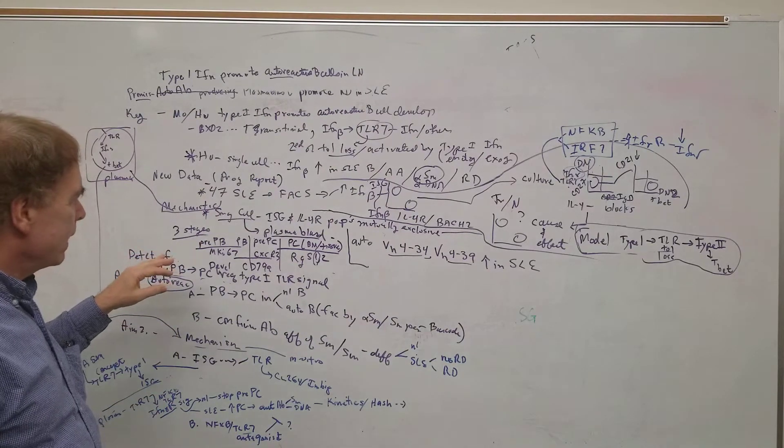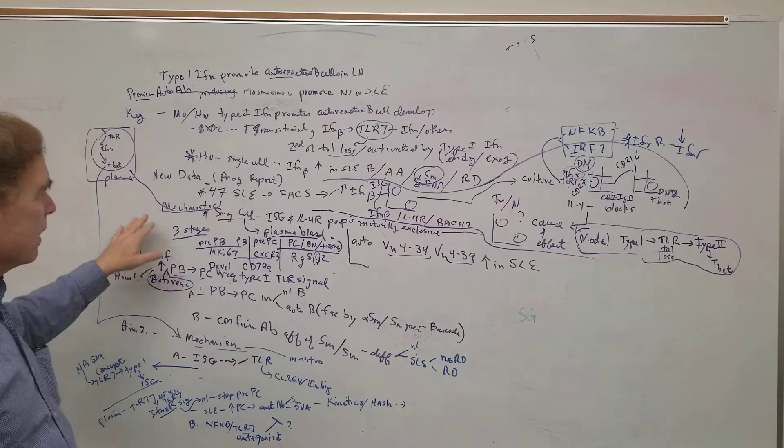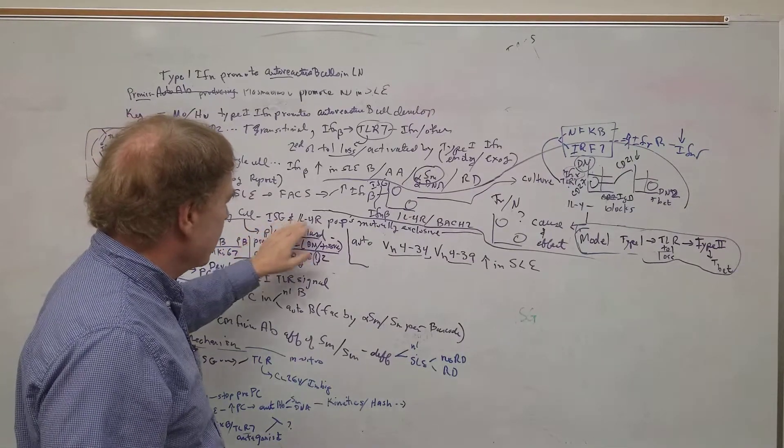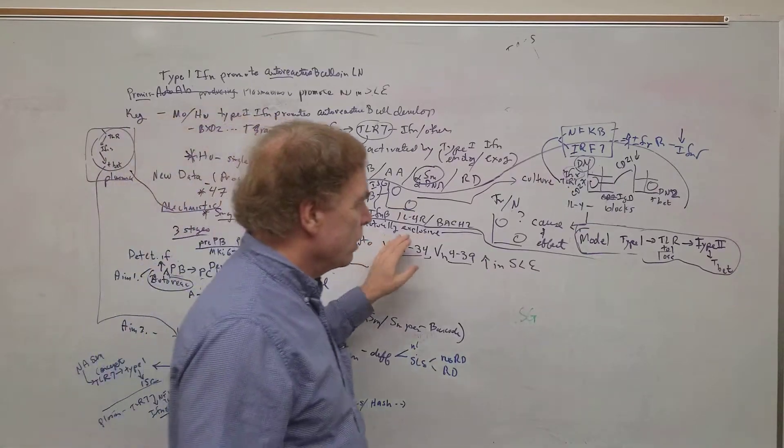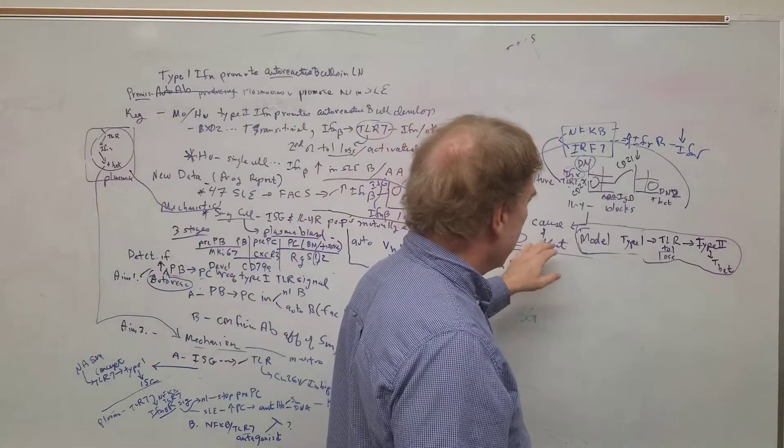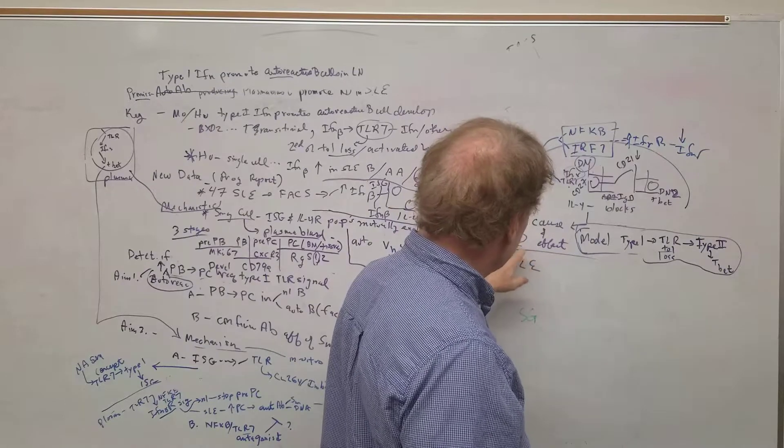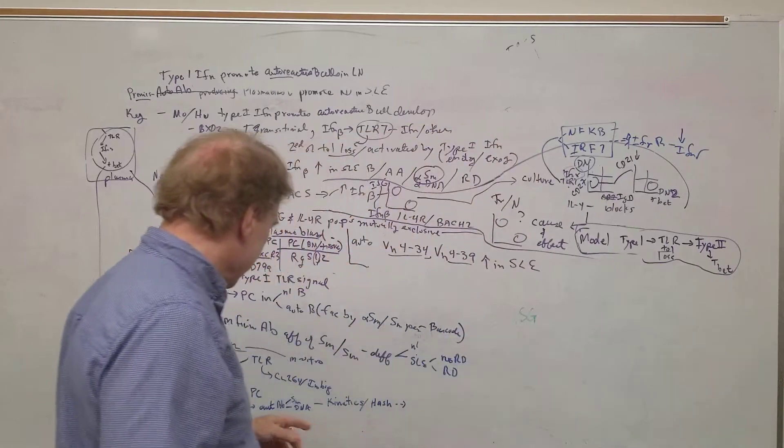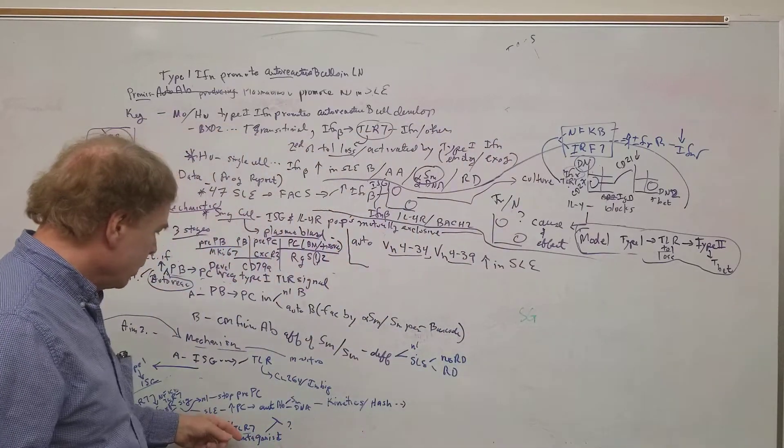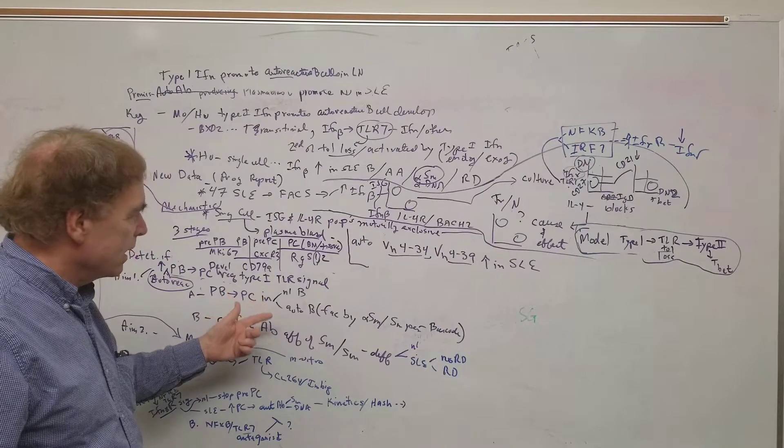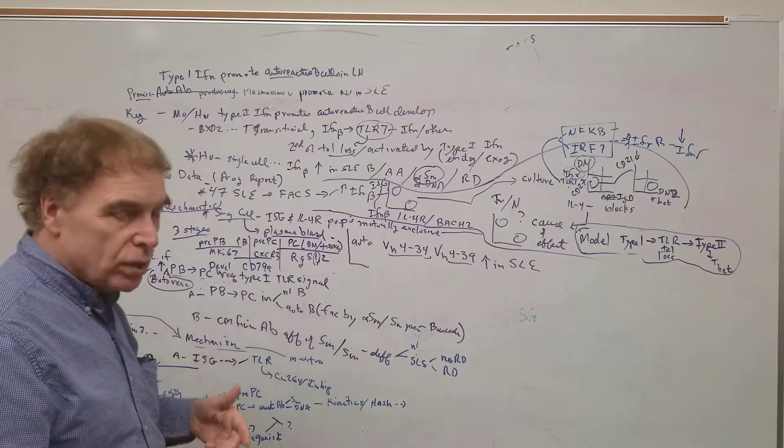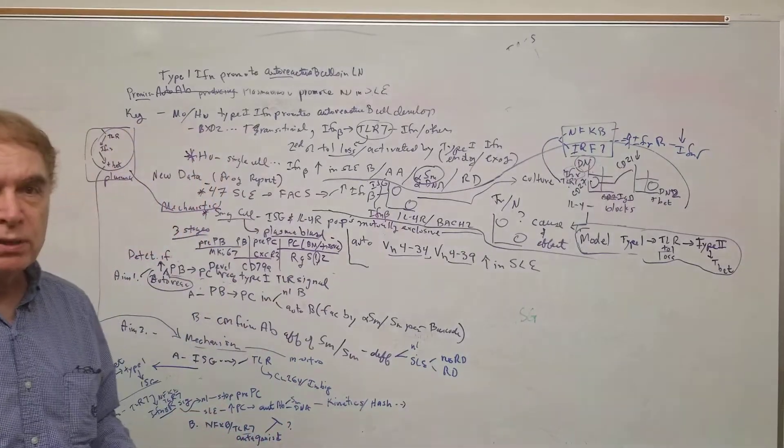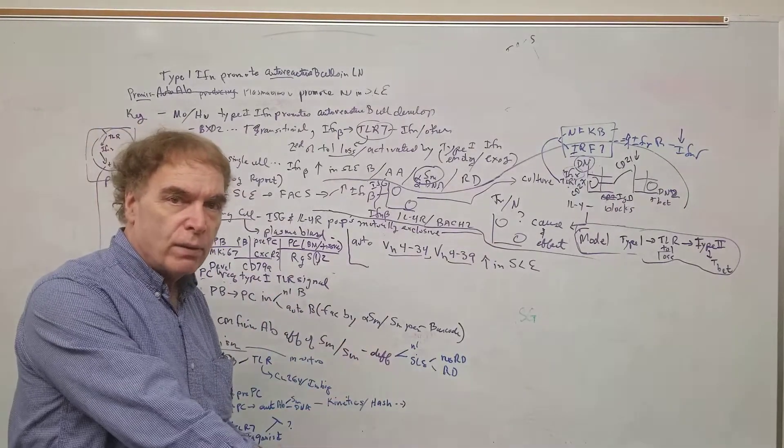They show that there is mutually exclusive populations of either ISG-positive B cells, that is some that have interferon, the genes are high, or IL-4 receptor is high. That's not in 47 people, but you get this dichotomy, you cannot have both ISG and IL-4 receptor, which both can be measured. Actually, this is interim data, in the cells we can measure this.